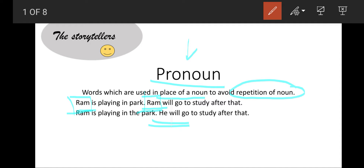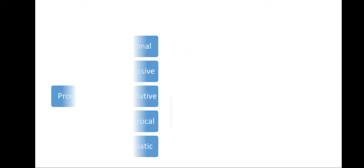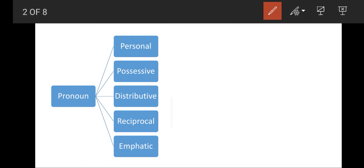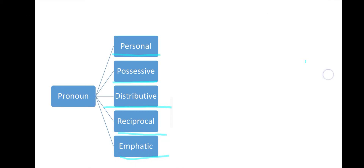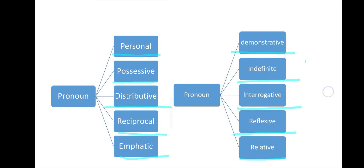In our daily life we use many pronouns like he, she, it, they, we, us, etc. Let us take a look at how many types of pronouns we have. There are 10 types of pronoun: personal pronoun, possessive pronoun, distributive pronoun, reciprocal pronoun, emphatic pronoun, demonstrative pronoun, indefinite pronoun, interrogative pronoun, reflexive pronoun. Now we will learn about them one by one.